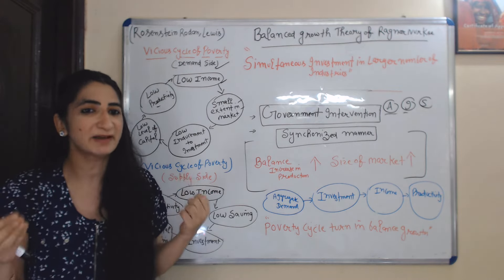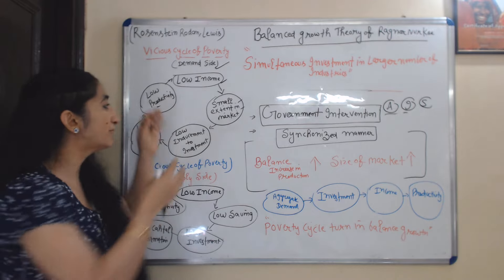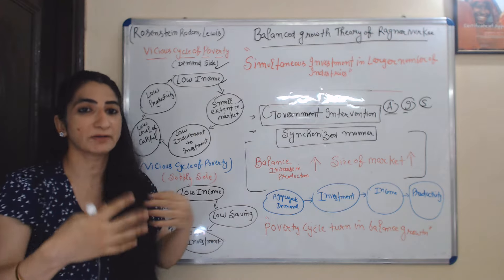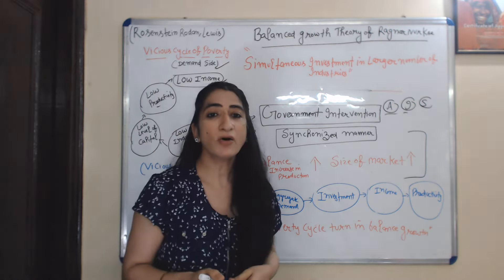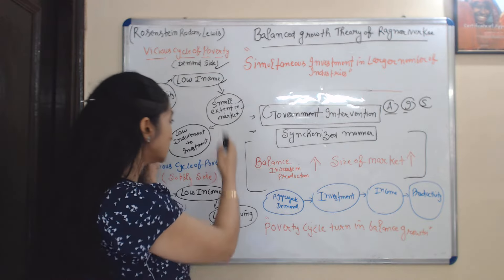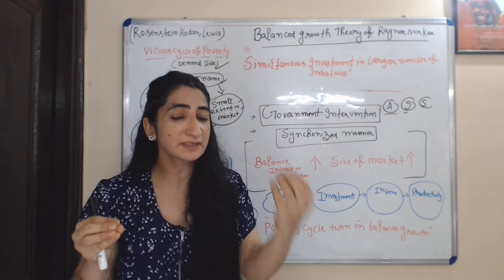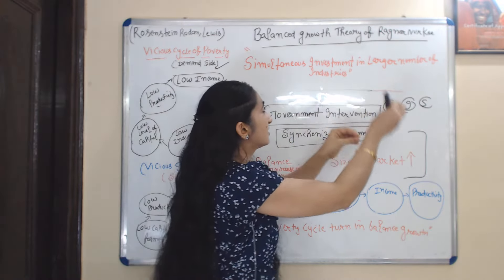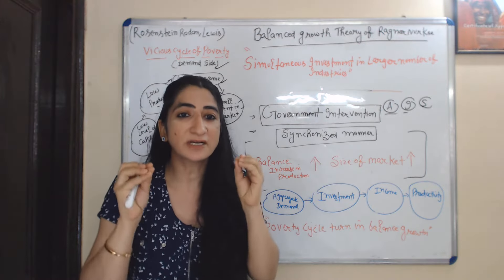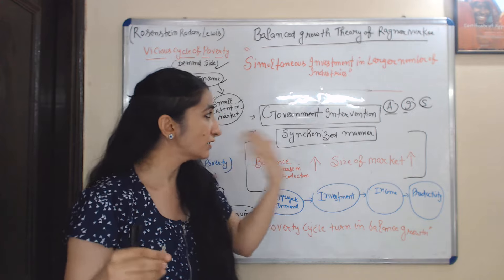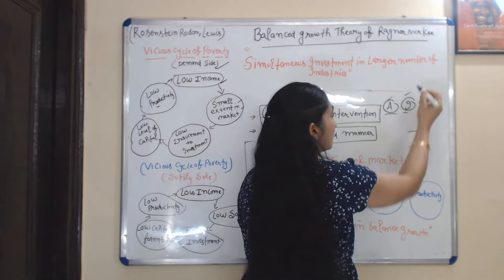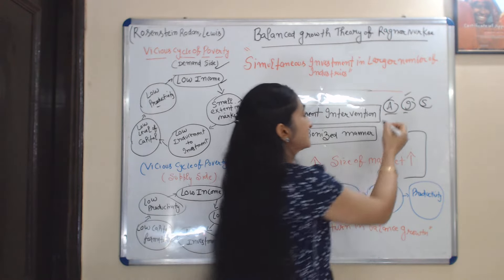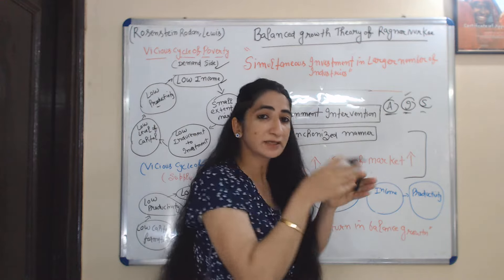According to Nurkse, if underdeveloped countries want to grow, they need to break this vicious cycle of poverty on both sides — the demand side as well as the supply side. The vicious cycle of poverty can be broken by simultaneously investing in a larger number of industries, meaning underdeveloped countries should invest in all sectors at the same time. For example, if there are three sectors operating — agriculture, industry, and service — the underdeveloped country should invest in all sectors at the same time, so all sectors grow in a balanced manner.